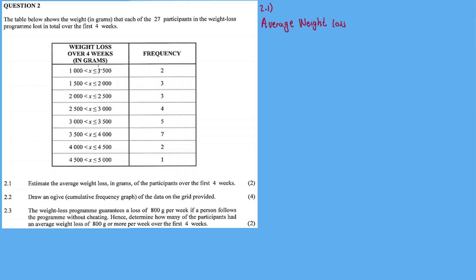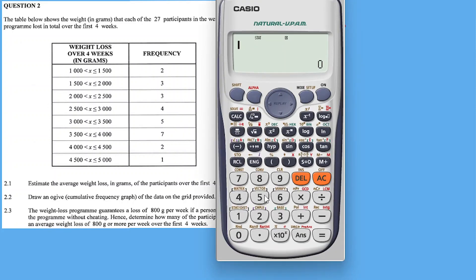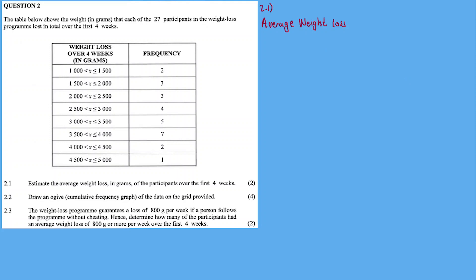So the midpoint between 1000 and 1500, it's 1000 plus 1500 divided by 2. That's 1250. This is equal to 1250 times 2. And then, it's going to be 1750 times 3. And then, the midpoint is 2250 times 3 again. So it's times 3.